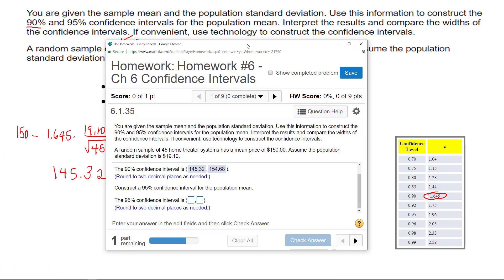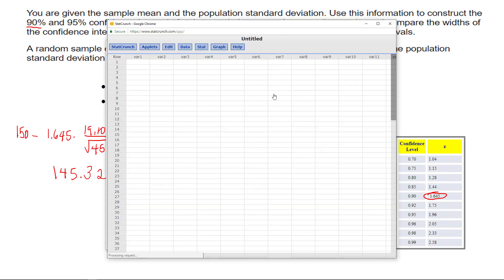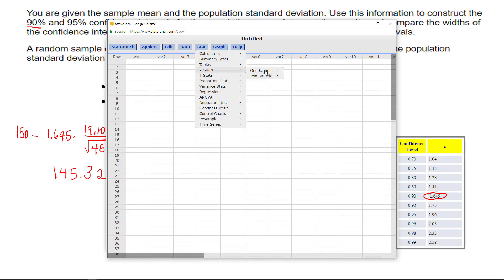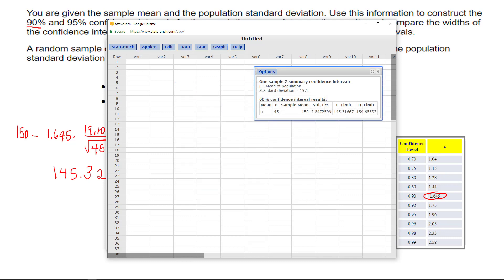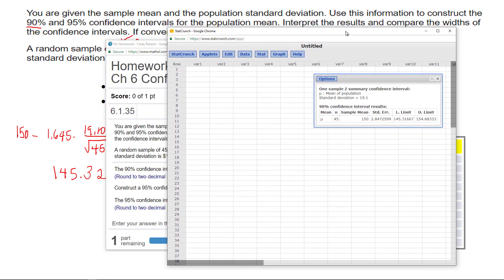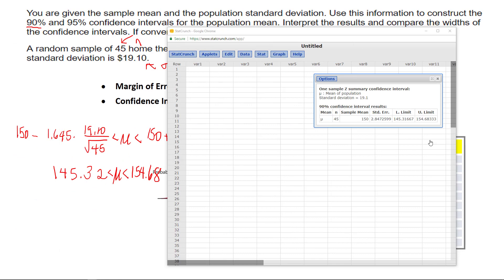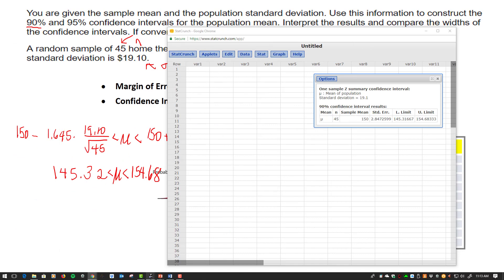If you wanted to do this in StatCrunch, because it even says use technology, I can open up StatCrunch. I just need to tell it stat, z-stat, one sample. I don't have data, I just have summary data, so I simply put in the sample mean which was 150, the standard deviation 1910, the sample size 45. I want to do a confidence interval about the mean of 90%. I hit compute and I get the same 145.32 and 154.68.